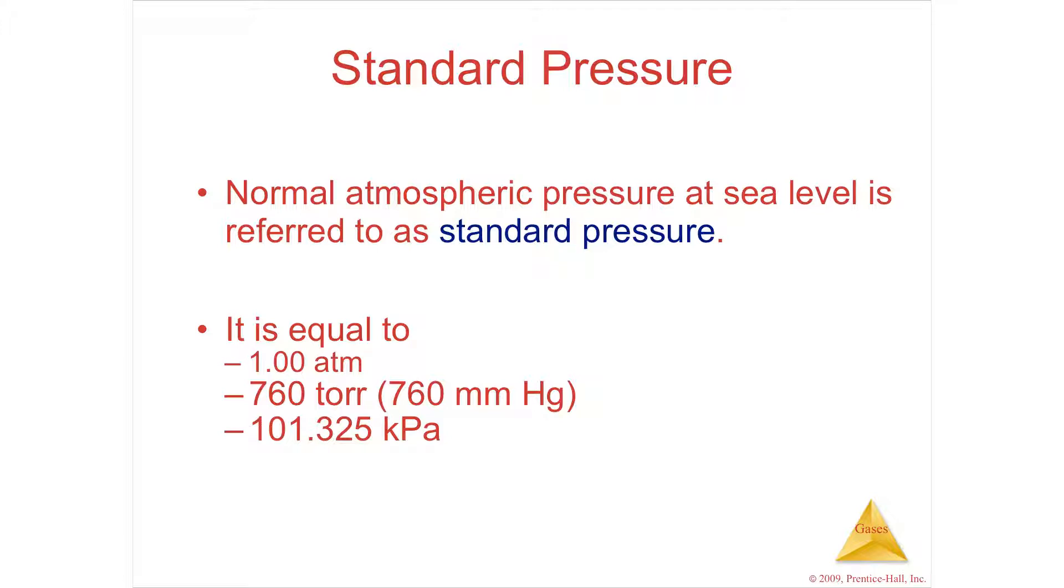Standard pressure is one atmosphere. One atmosphere is normally 760 in the barometer—760 millimeters, which is called 760 torr. One millimeter of mercury is a torr, and that's equal to 101.3 kilopascals. All of them can be interchanged and used interchangeably.